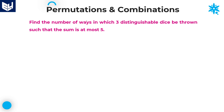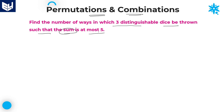Hi everyone, welcome to the session. In this session, I am continuing the problem related to permutations and combinations. See the first question in this session. The question is: find the number of ways in which three distinguishable dice be thrown such that the sum is at most 5.